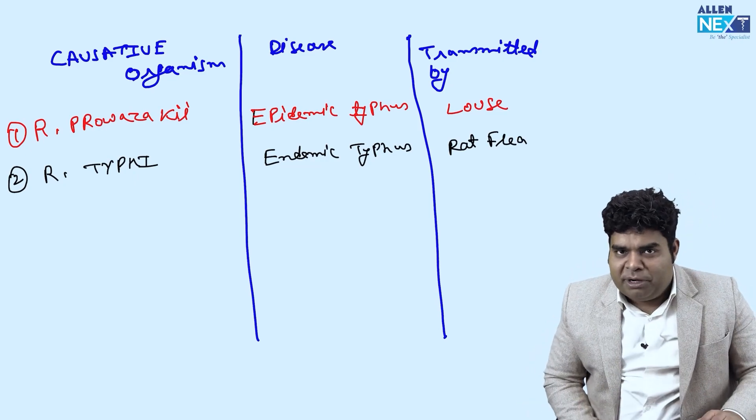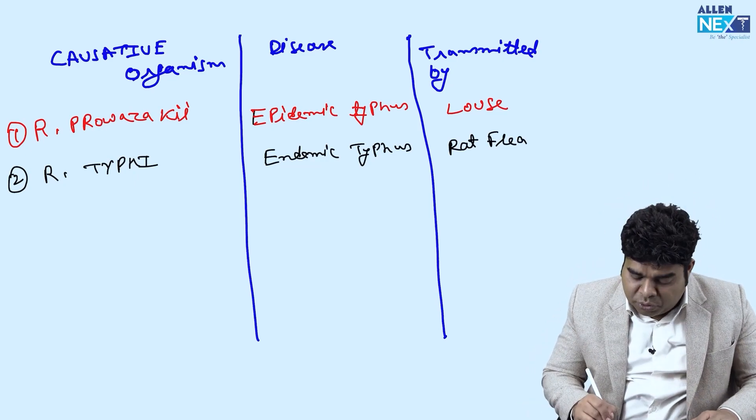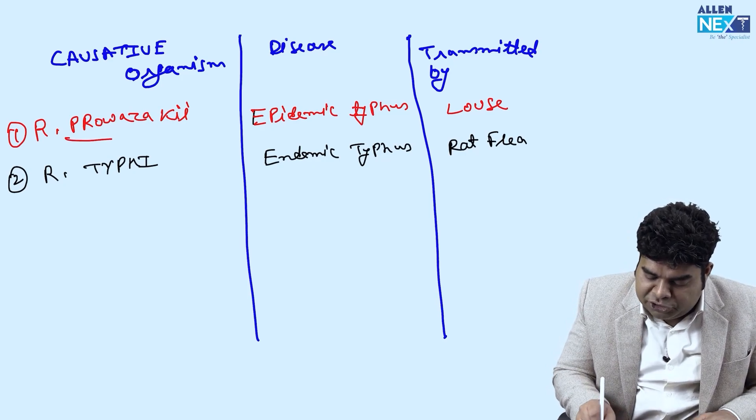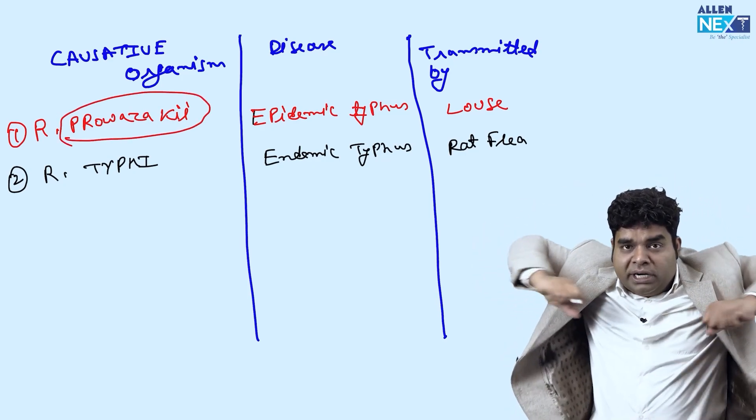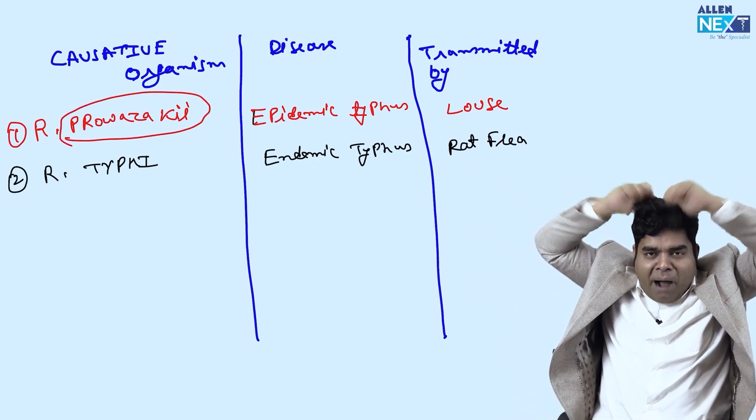So I used to get confused a lot between these two and to remember it separately, I used to think that it is provazeki, power is there. So it is epidemic typhus, big thing, power.